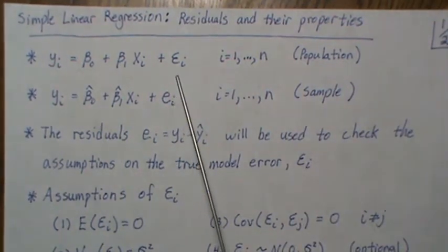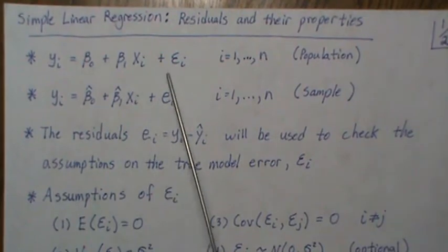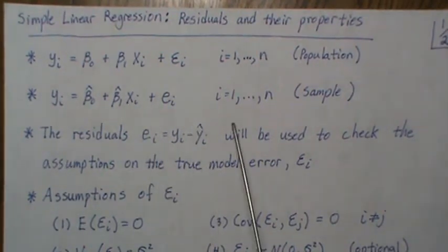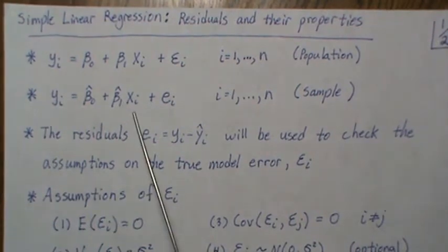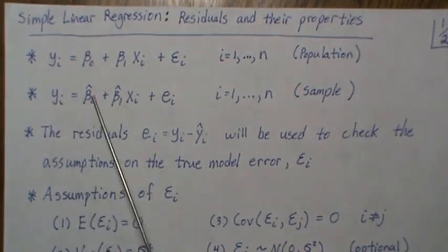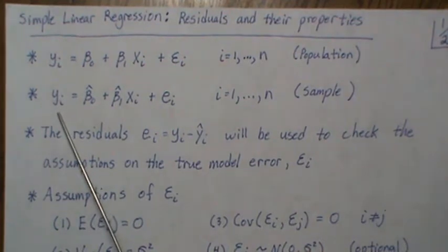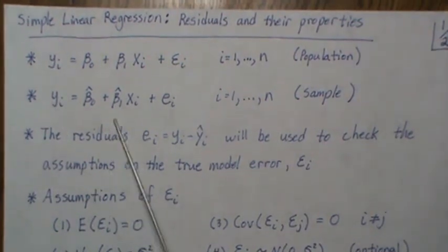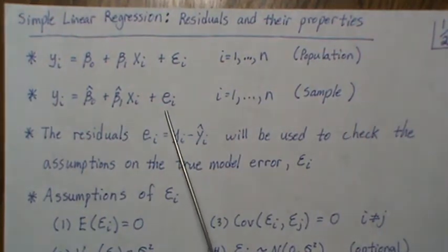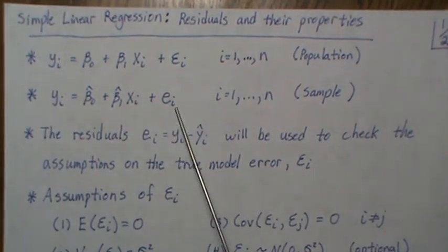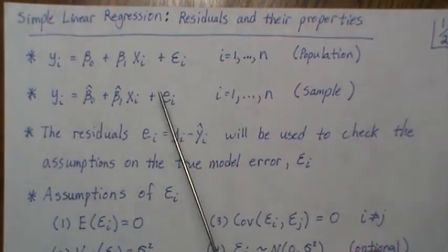This is the population model if we knew β₀, β₁, and the epsilons. What we do is take a sample of size n as tuples (X, Y), fit a line, and then the data Y follow this least squares line plus some residual.